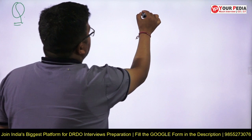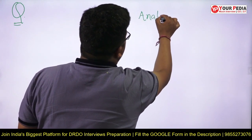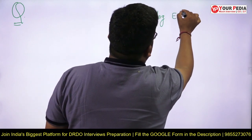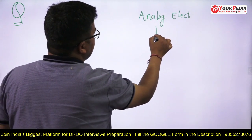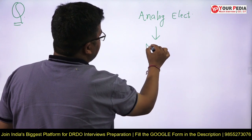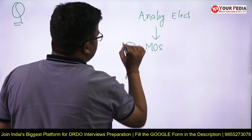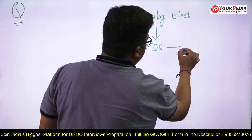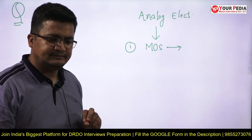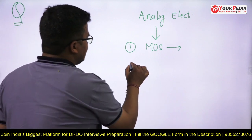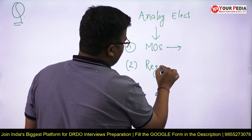Let us start with your favorite subject — let us say analog electronics. In analog electronics, the first question he will ask is: do you have any idea about MOS? So obviously you will start defining that metal oxide semiconductor — its construction, its terminals, and all that. That is a basic definition. Now the second question he will ask is: what are the regions of operation?